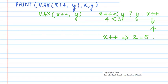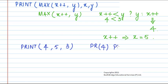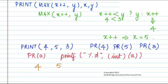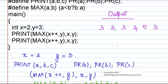So when the arguments in the print statement are replaced, we get print(4, 5, 3) — the result of the max macro is 4, the value of x is now 5, and the value of y is 3. The definition of print expands to pr(4), pr(5), and pr(3). The definition of pr is printf("%d", a), so 4, then 5, then 3 will be printed. That is how we got the full output: 3 3 3 4 5 3.